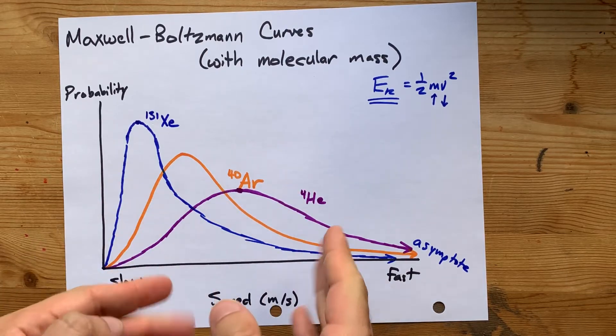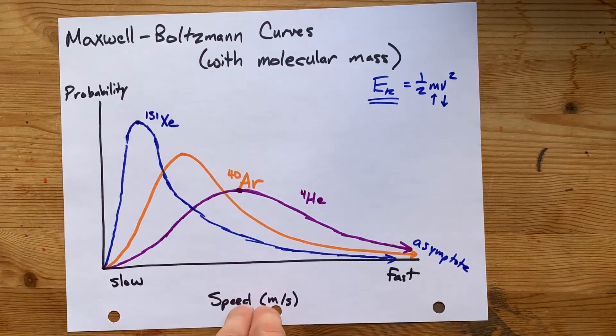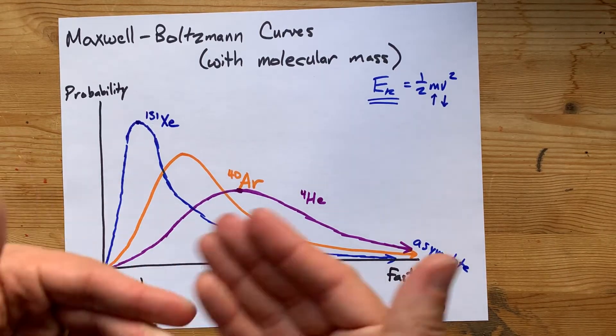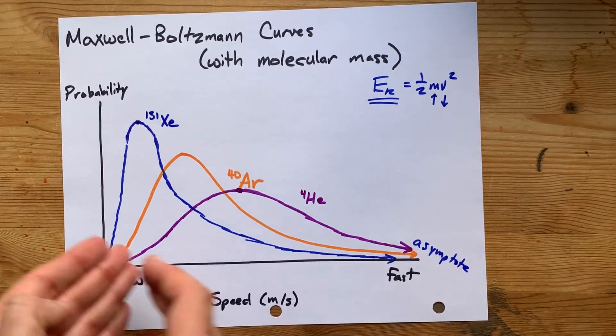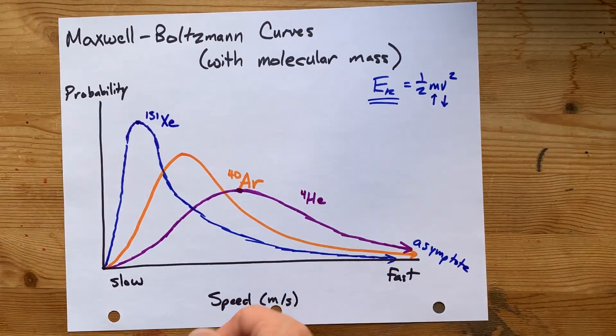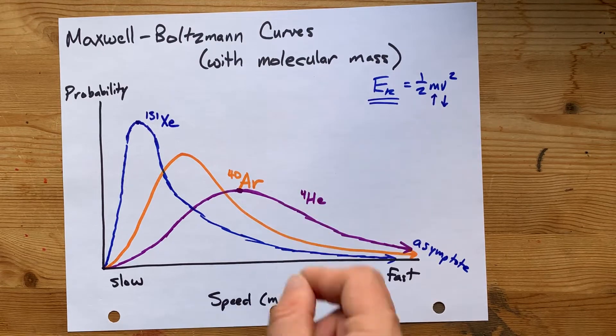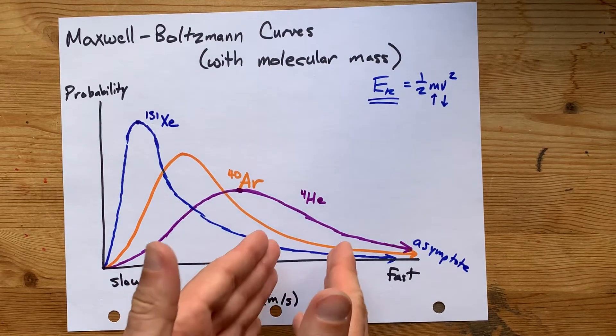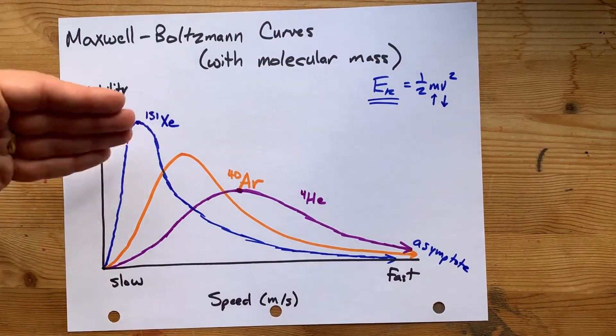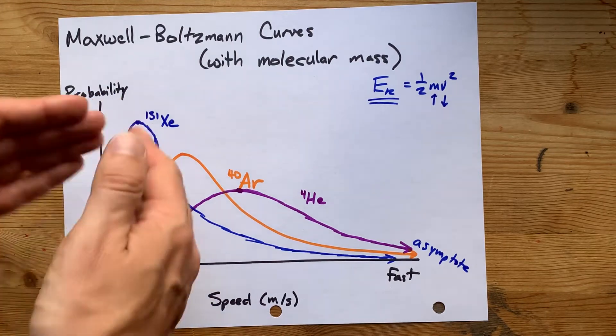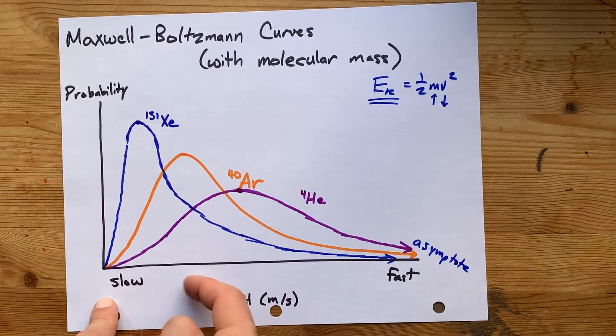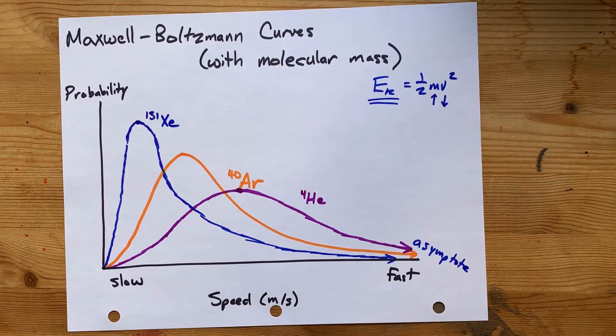For lighter particles, you're more probably at higher speeds because a certain temperature can get the lighter molecules to move faster because it's the kinetic energy that is constant. And then the heavier particles are more probably moving slower. So that peak is higher and to the left, aka slower on this speed axis.